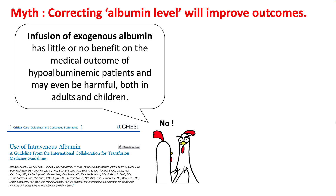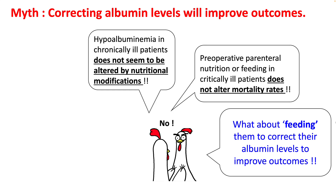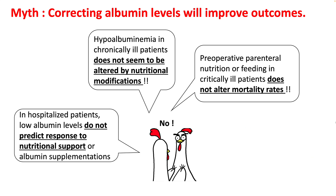Infusion of exogenous albumin has been studied and has little or no benefit on the medical outcome of hypoalbuminemic patients, and can even be harmful. What about feeding patients to correct albumin levels and improve outcomes? While this is a good thought, it has not been proven to be clinically accurate. Preoperative parenteral nutrition or feeding critically ill patients does not alter mortality rates. In chronically ill patients, hypoalbuminemia does not seem to be altered by nutritional modification — meaning even if you overfeed these patients, their albumin levels will not change. In hospitalized patients, low albumin levels do not predict response to nutritional support or albumin supplementation.